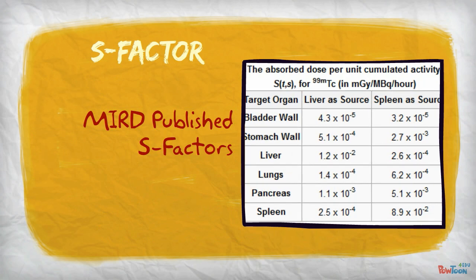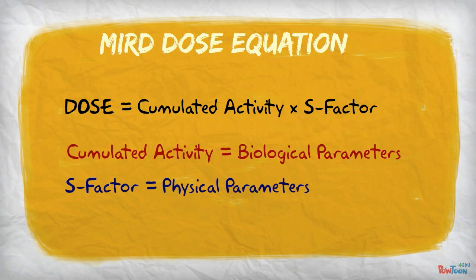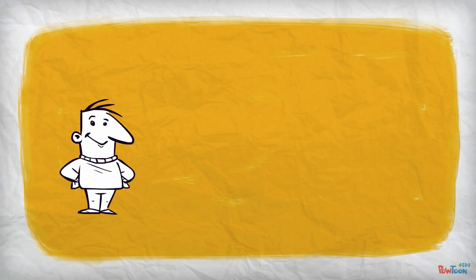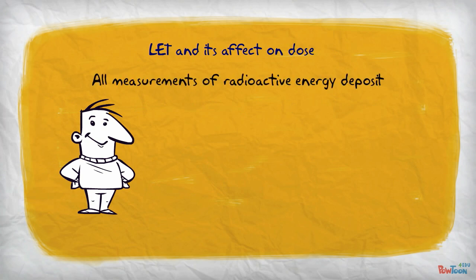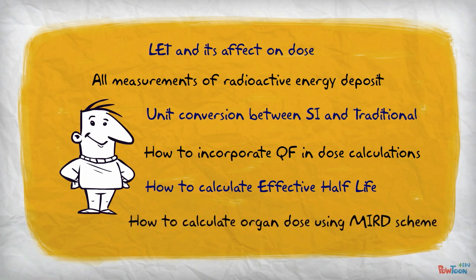Putting it all together now, the MIRD dose equation is simplified to accumulated activity times the S-factor. Make sure you understand that accumulated activity considers the biological parameters and the S-factor considers the physical parameters. Although we went quickly over all of the concepts here, there are some important ones. In review, you should understand LET and its effect on dose to the patient. All measurements of radioactive energy deposit and converting their units between SI and traditional. How to incorporate QF in dose calculations. How to calculate effective half-life. And how to calculate organ dose using the MIRD scheme. You should also be familiar with all the concepts associated with these.